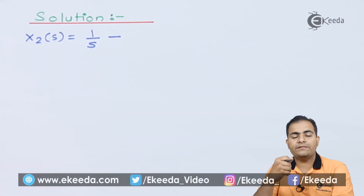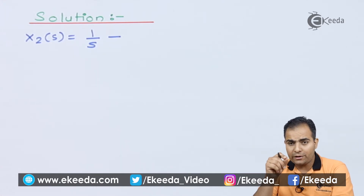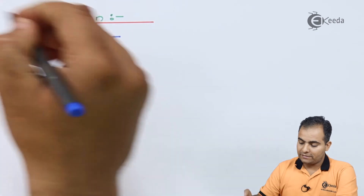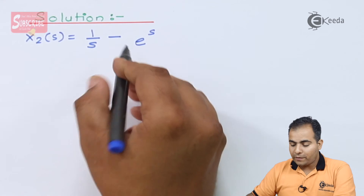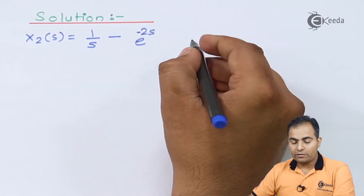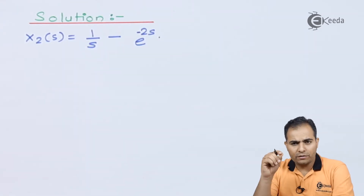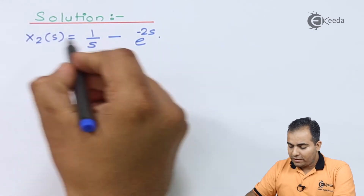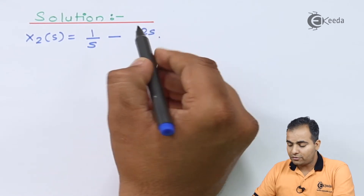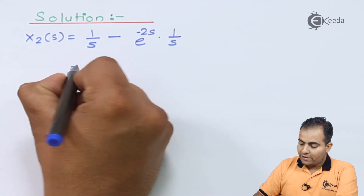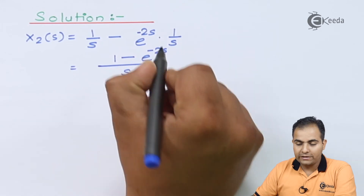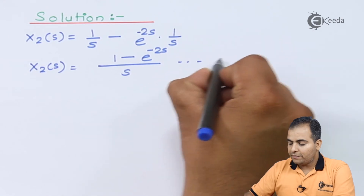According to the time-shifting property, whenever a function is delayed, multiply the s value with the delayed value. The unit step function was delayed by −2, so we get e^(−2s) multiplied by the Laplace transform of u(t), which is 1/s. Taking s common in the denominator gives (1 − e^(−2s)) / s. This is X2(s), which I call equation number 3.